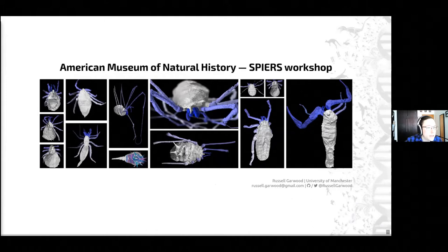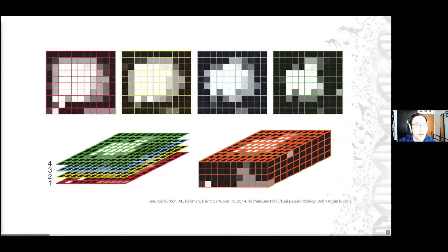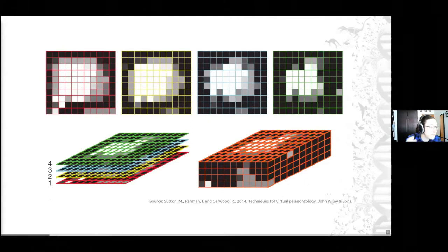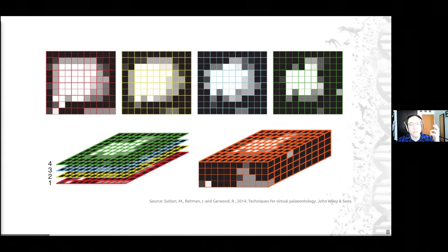The first thing I wanted to highlight is a conceptual difference between how you can visualize data in a computer. This does relate to Spears, but it's also really important background. If we're dealing with CT or any form of tomographic, slice-based data, there are two ways of dealing with it. We can deal with it as a volume — 3D pixels each with a volume and a gray level — or we can think of it as an image stack, a series of images one on top of each other.